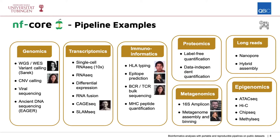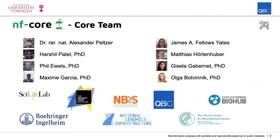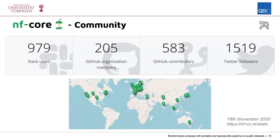People at Qubik have actively contributed code to many of these pipelines. For example, Chris contributed to HLA typing and epitope prediction, and Gisela wrote the B cell pipeline. We've also run quite some RNA-seq data with that pipeline. NFCore consists of a core team of eight people from different institutes — Gisela is the core member from Qubik. They organize hackathons and make decisions for NFCore. Since its founding in 2017–2018, the community has grown to about 1,000 Slack users and 600 code contributors worldwide.